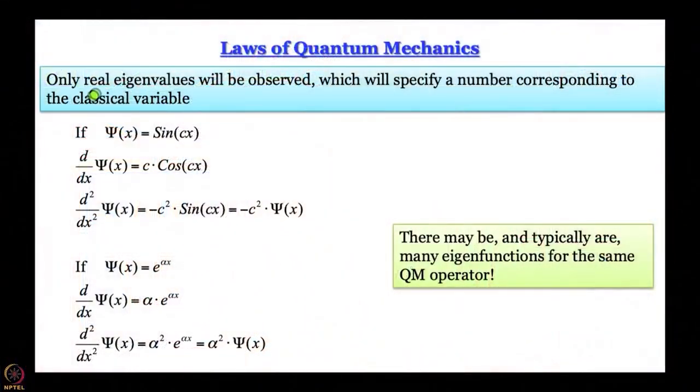Another way of expressing this is that quantum mechanical operators must be Hermitian. A Hermitian operator always has real eigenvalues. So saying that only real eigenvalues will be observed is equivalent to saying that all quantum mechanical operators are Hermitian operators. We will come back to discuss why Hermitian operators have real eigenvalues in more detail later, but for now let us take it axiomatically.